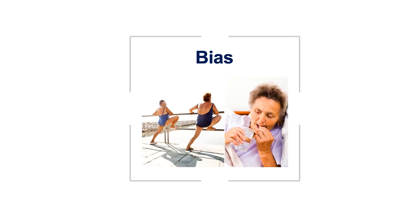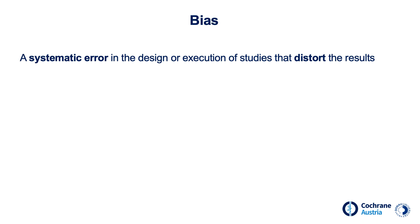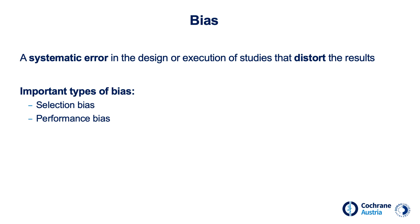Bias is another source of error in studies. Bias is a systematic deviation from the true effect that can be caused through the design, conduction, or analysis of a study. In contrast to random error, bias would always distort the results in the same direction if one performed the study multiple times. There is a variety of bias subcategories; here are four types important in interventional studies: selection bias, performance bias, measurement bias, and attrition bias.